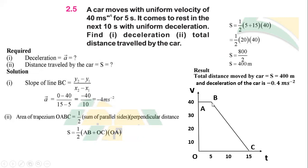To find acceleration, we use the slope of the speed-time graph. The speed at point C is 0 and at point B is 40. Time at C is 15 seconds and at B is 5 seconds. So acceleration = (0 − 40) ÷ (15 − 5) = −40 ÷ 10 = −4 meters per second squared. The minus sign indicates this is deceleration.